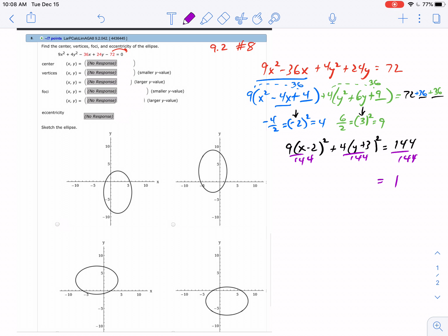9 over 144—if you hit math enter enter on your calculator—gives you 16. So this is (x minus 2) squared over 16. You do not need to write the 1 out front; it wouldn't do anything anyway.